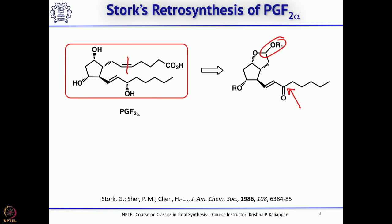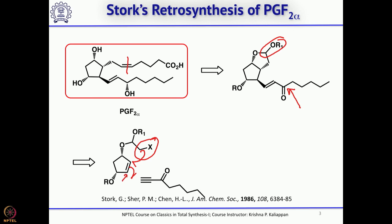The next step is the key radical cyclization followed by trapping of the resultant radical. What he did was prepare this halo compound. This can undergo a 5-exo radical cyclization onto the double bond, generating a radical at that carbon. If you add an acceptor, it can add to the triple bond, giving directly the alpha-beta unsaturated ketone. That was the original plan — let us see how he achieved this transformation.